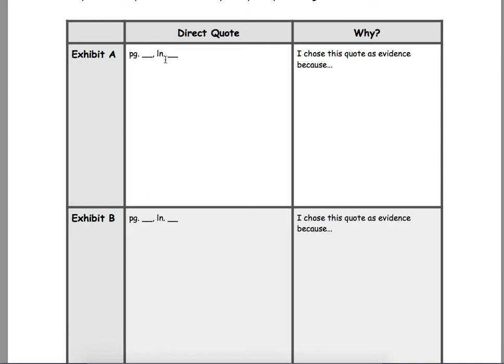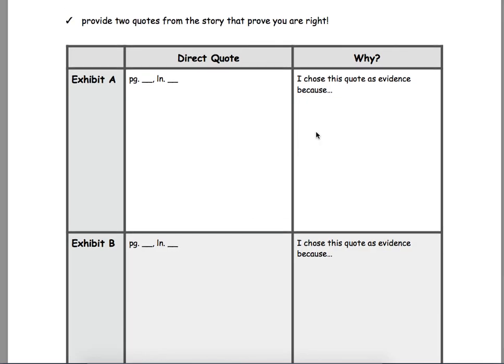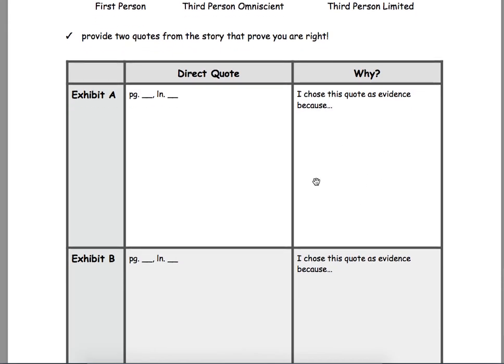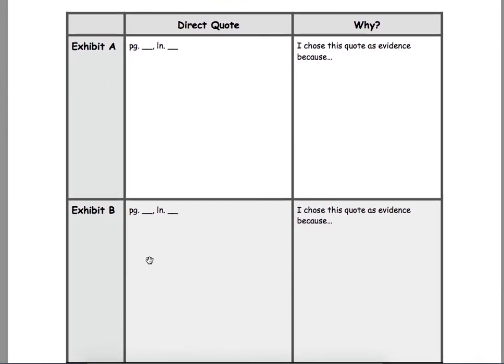Find a quote. Page and line. Make sure you mark that. Write one sentence from the quote, or maybe more if you need it. And then tell us why you chose that quote. In other words, tell us why it is either first person, third person, or third person omniscient, or third person limited. So, you're proving why you circled one of these. And you just need two examples for why.